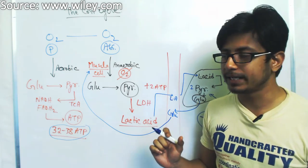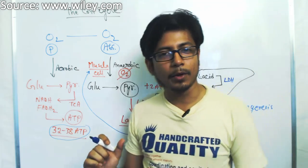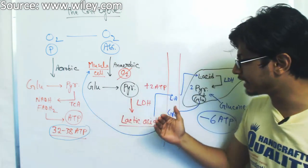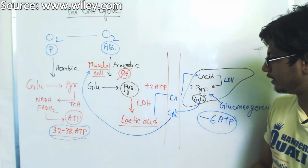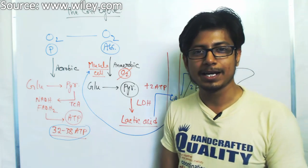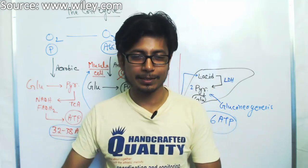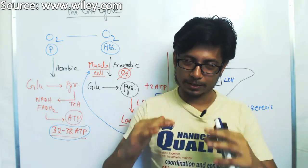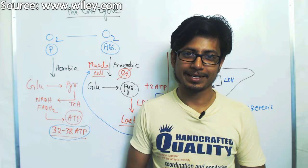This whole cycle — taking lactic acid, converting it into glucose, and providing it back to the muscle — is known as the Cori cycle. I hope you understand this video. I also recommend you watch the second part of this video lecture, where you'll see the actual sequential stages of the Cori cycle in detail.